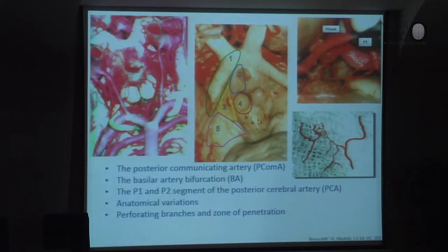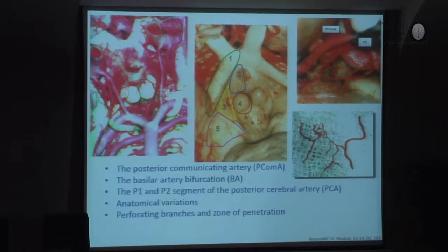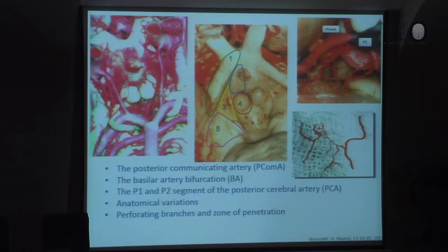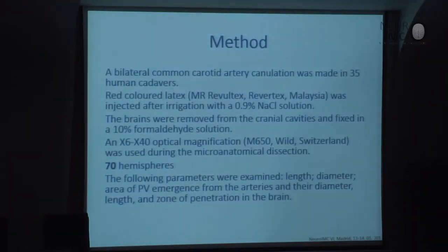Here we can find some illustrations about the Circle of Willis, mainly about its posterior part. I will now talk in more detail about the posterior part of the Circle of Willis — the posterior communicating artery (PCOM), the basilar artery, the P1 and P2 segments of the posterior cerebral artery, and the anatomical variations. We studied 35 human cadavers using the technique for coloring the arteries, yielding 70 hemispheres studied with optical magnification of 6 to 40 times.